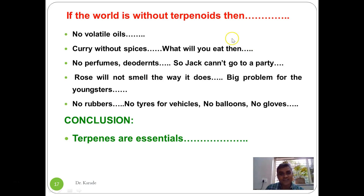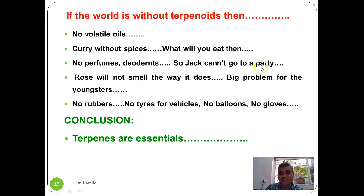If terpenes did not exist, our world would be very different. The spices used in Indian cooking contain terpenes and terpenoids, so without them food taste would be affected. Without essential oils there would be no perfumes or deodorants. And since polyisoprene is natural rubber, without terpenoids there would be no rubber, no tires for vehicles, no balloons, and no gloves. Therefore, terpenes are indeed very essential.